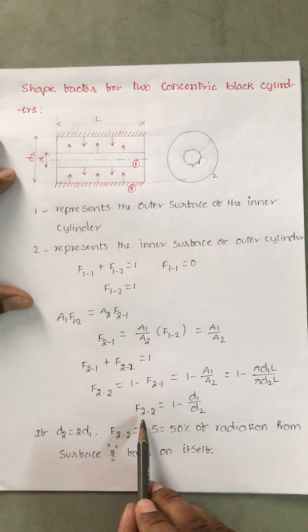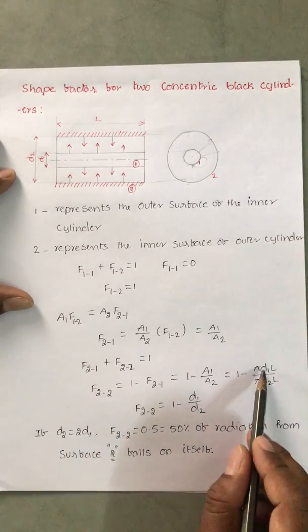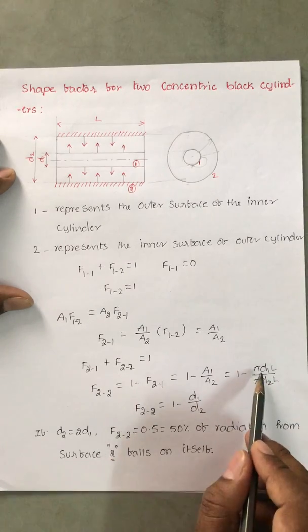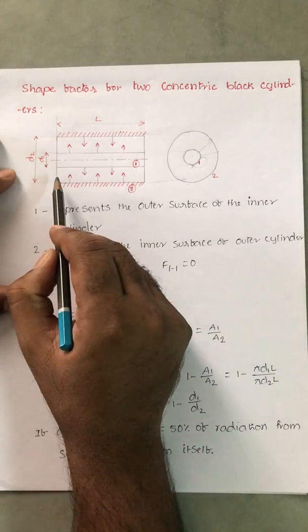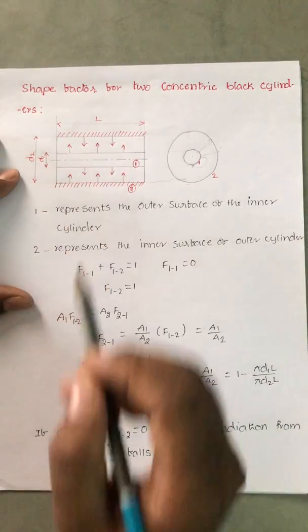Now F₂₂ equal to 1 minus π into π... π get cancelled, L's get cancelled. 1 minus D₁ by D₂. If D₂ is equal to 2D₁, that means outer diameter is double the inner diameter.